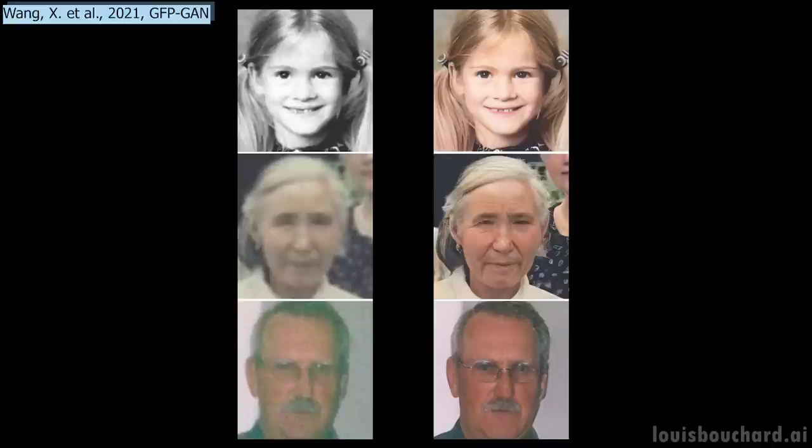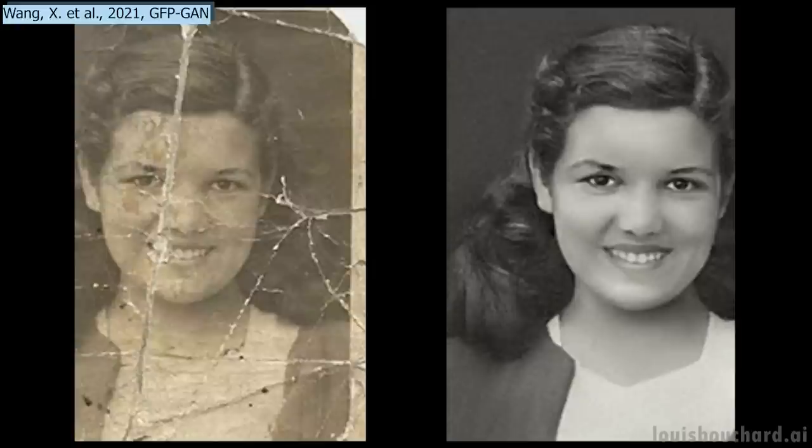We couldn't guess that a model created more pixels without knowing anything else about the person. So the model tries its best to understand what's in the picture, fill in the gaps, or add pixels if the image is of low resolution. But how does it work? How can an AI model understand what is in the picture, and more impressively, understand what isn't in the picture — such as what was in the place of the scratch? Well, as you will see, GANs aren't dead yet.